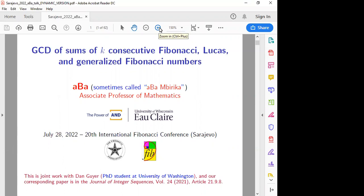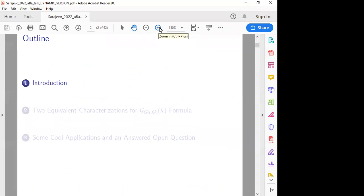So this is joint work with Dan Geyer, who's now a PhD student at the University of Washington, and the corresponding paper of all of them, as you see, are in this journal of integer sequences paper. Actually, I have three copies up here, if anyone would like one at the end of the talk. Okay, so let's begin.